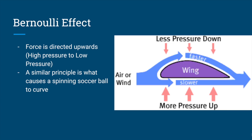Before we get into that, let's talk about some of the physics behind curving a soccer ball. The first thing we're going to talk about is the Bernoulli effect. The Bernoulli effect essentially states that the faster the wind speed is on one side of an object, the less pressure there will be on that same side — and vice versa, the slower the wind speed is on one side, the more pressure there will be on that side.